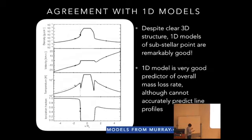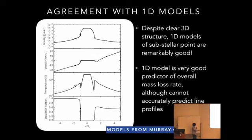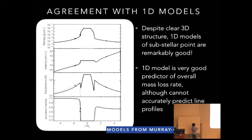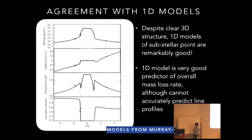Despite all of the interesting structures arising from the strong day-night difference in irradiation, the 1D models that go through the substellar point are actually remarkably good. These are 1D models from Ruth Murray Clay's 2009 paper. The black lines show the ionization fraction, temperature, velocity, and density as a function of the line-of-sight direction from our simulation, and the dashed lines show the simple 1D model. The matchup on the substellar ray is really, really good. With a simple geometric correction, you can use these 1D models to capture the mass loss rates — which is a really good thing because it's expensive to do a full 3D SMR simulation for every different hot Jupiter you might want to study. At least in the non-magnetized case, you can get a reasonable estimate of the mass loss rate.